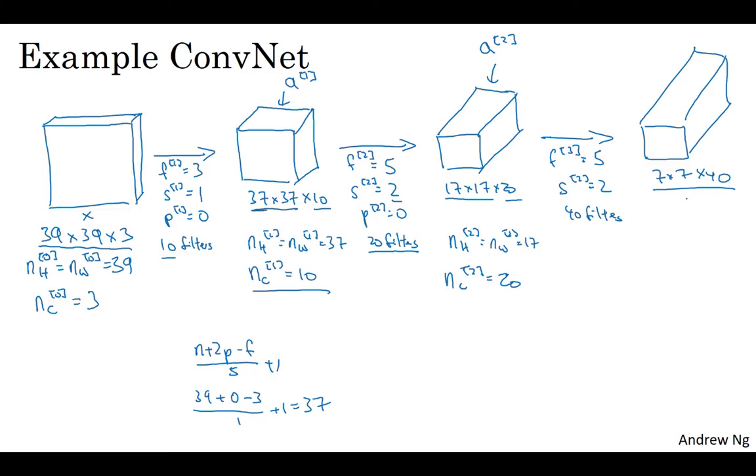And then finally, what's commonly done is if you take this 7 by 7 by 40, 7 times 7 times 40 is actually 1,960. And so what we can do is take this volume and flatten it or unroll it into 1,960 units. Just flatten it out into a vector and then feed this to a logistic regression unit or a softmax unit.